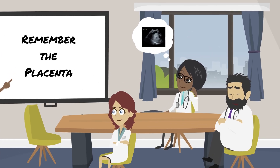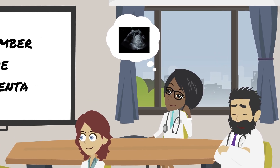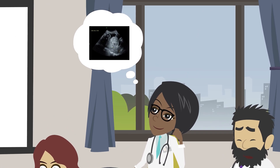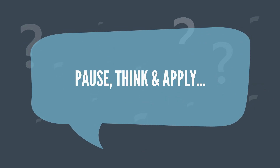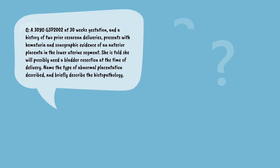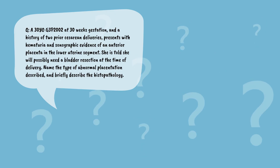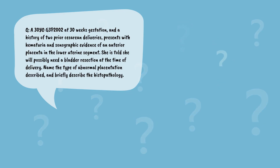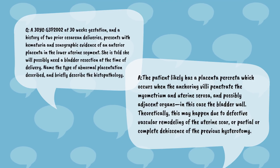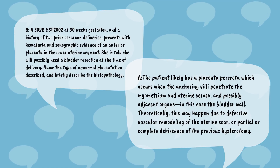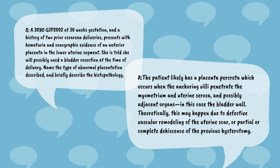Think fast! A 30-year-old Gravida 3 Para 2002 at 30 weeks gestation with a history of two prior cesarean deliveries presents with hematuria and sonographic evidence of an anterior placenta in the lower uterine segment. She is told she will possibly need a bladder resection at the time of delivery. Name the type of abnormal placentation described and briefly describe the histopathology. The patient likely has placenta percreta, which occurs when the anchoring villi penetrate the myometrium and uterine serosa and possibly adjacent organs — in this case, the bladder wall. This may happen due to defective vascular remodeling of the uterine scar or partial or complete dehiscence of a previous hysterotomy.